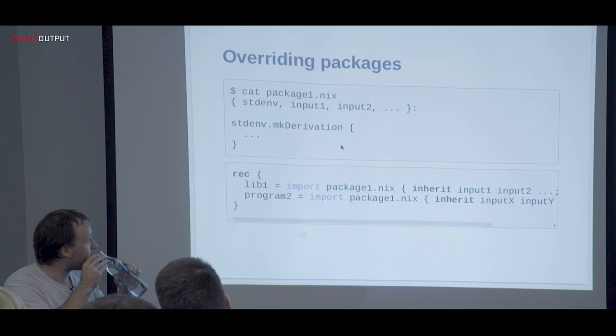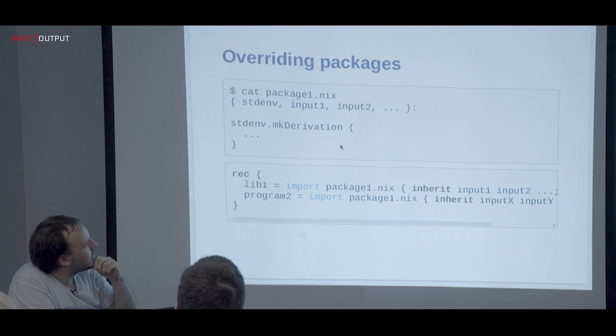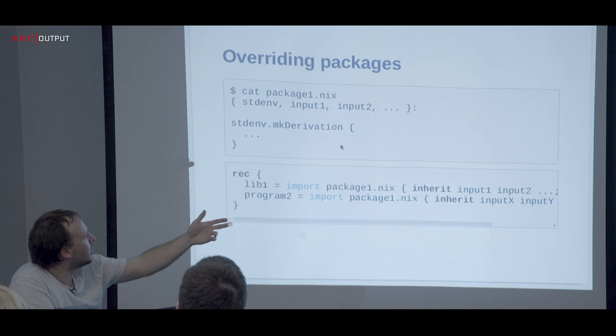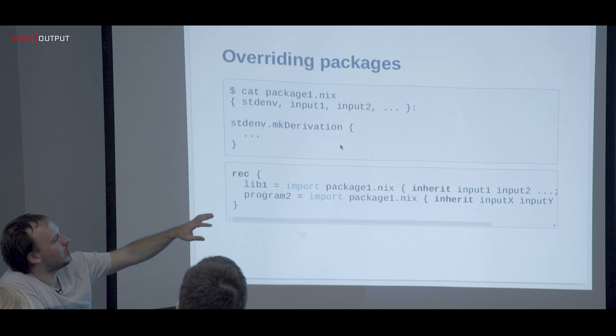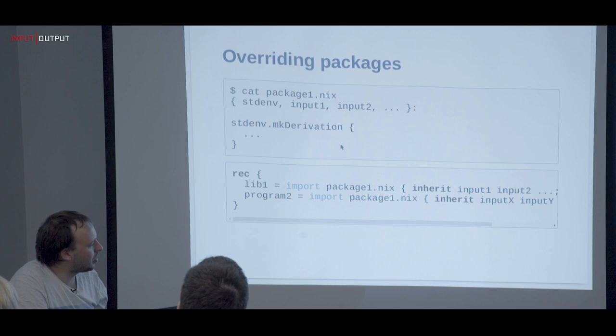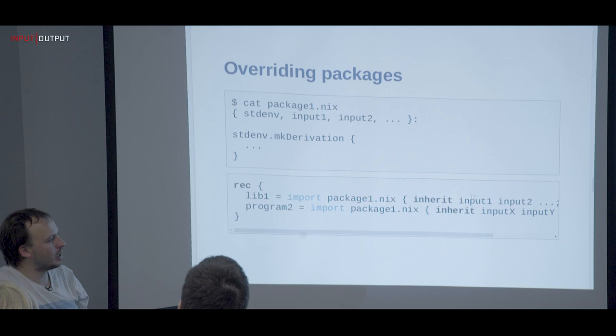A typical package takes as input an attribute set of all the packages it needs, uses `stdenv.mkDerivation`, and uses those packages across the different build stages. The point is you can override these inputs. The first naive approach is to have an attribute set of packages, import them, and fill in all the inputs — those inputs come from the top-level attribute set. Of course you can't have cycles.